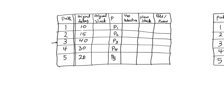Path 1 finishes in 10 and needed to finish in 40, so it has 30 slack. Path 2 needed to finish in 40 and finished in 15, giving it a slack of 25. Path 3 is the critical path — we are operating at a clock period of 40, giving it a slack of zero. Path 4 will have a slack of 10 and path 5 a slack of 20. We will not see negative slacks because the clock period equals the longest path.